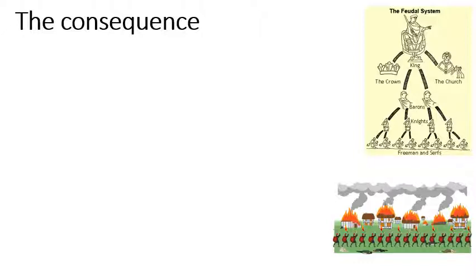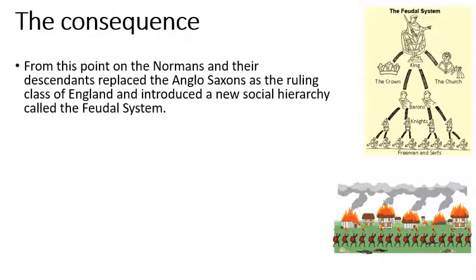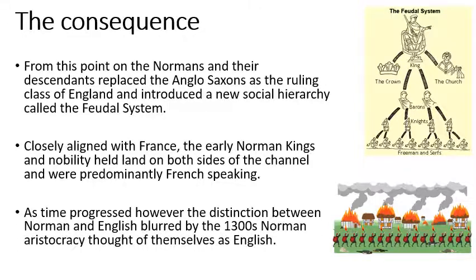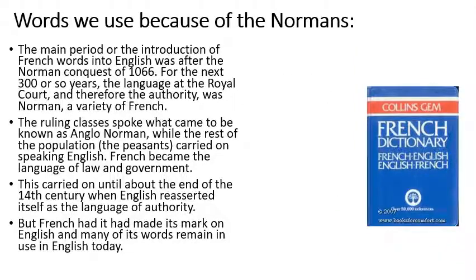So why is this Norman Conquest significant? When William came in, he and his French nobles replaced the existing Saxon or English nobles in Britain, and through the creation of the feudal system completely reordered English society — with the king at the top, the barons below him, the knights below them, and the freemen, serfs, and peasants below them. He also crushed any rebellion. The Norman kings in England were closely aligned with France and all spoke French — William the Conqueror did not speak English. As time went on, the division between the English Normans and the French Normans grew, and by the 1300s the Norman aristocracy thought of themselves as English.